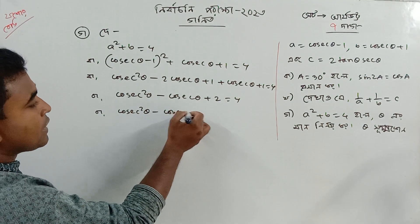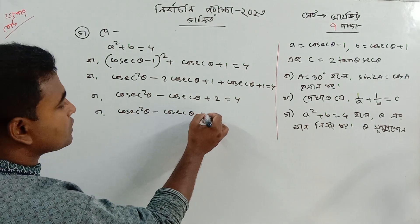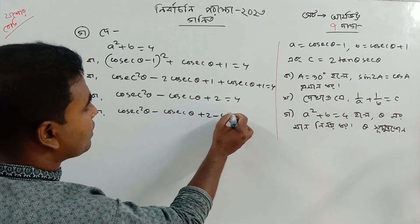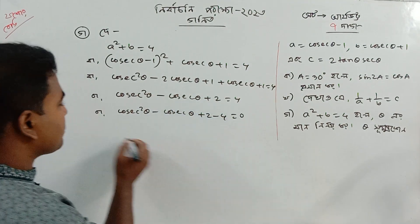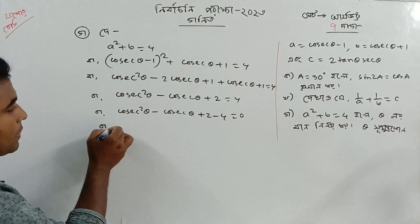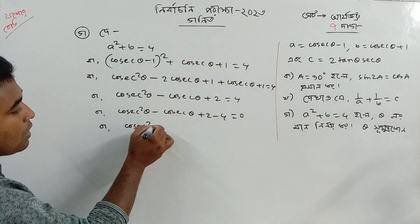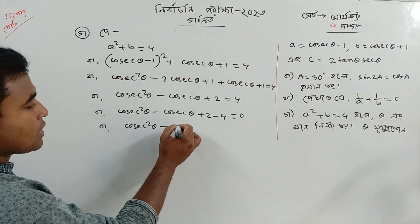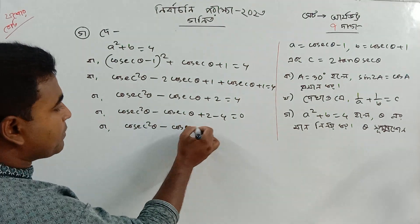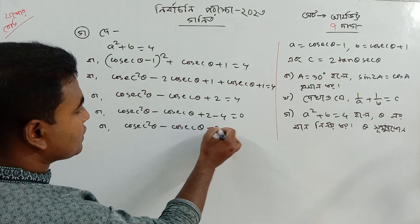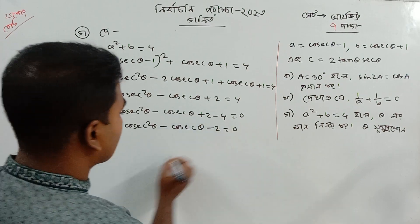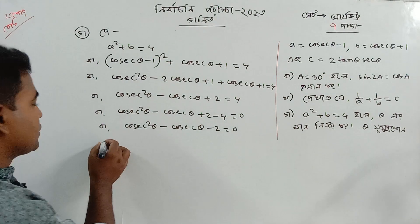A is cosec theta minus 1 whole square, and B is cosec theta plus 1, equal to 4. It has a squared minus 2AB plus B squared, which is cosec theta minus cosec theta plus 2 equal to 4. Cosec theta minus cosec theta minus cosec theta plus 2 minus 4: cosec theta minus cosec theta minus 2 equal to zero.